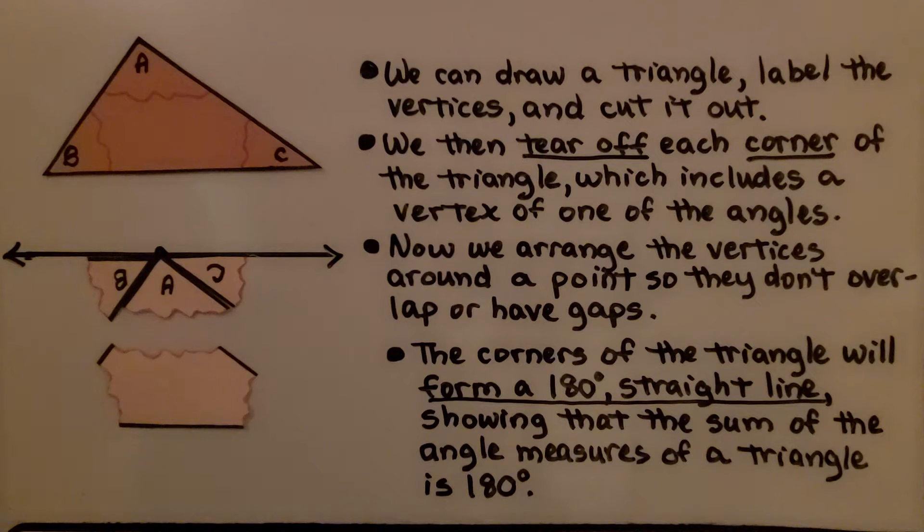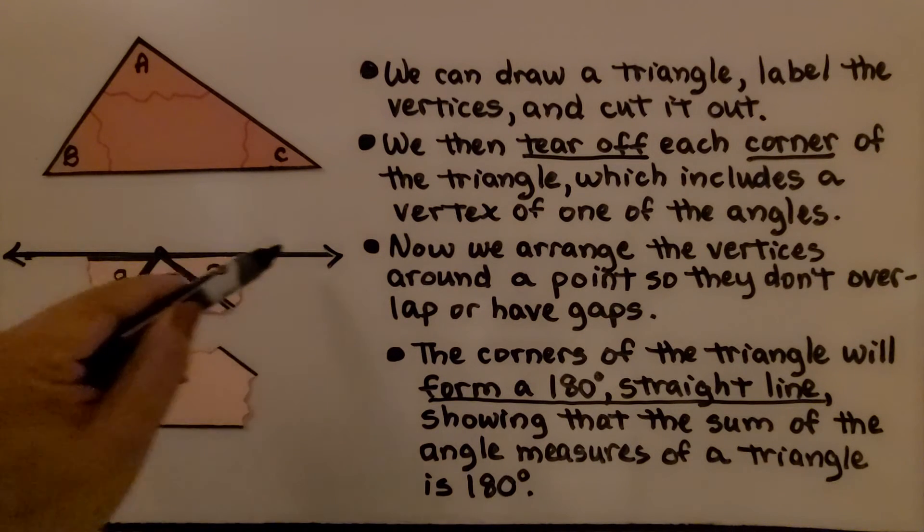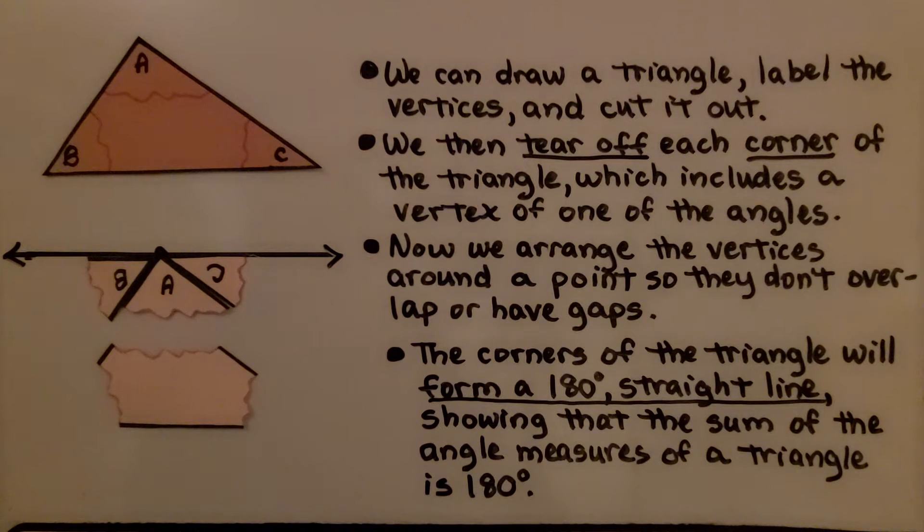And the corners of the triangle will form a 180-degree straight line, showing that the sum of the angle measures of a triangle is 180 degrees.